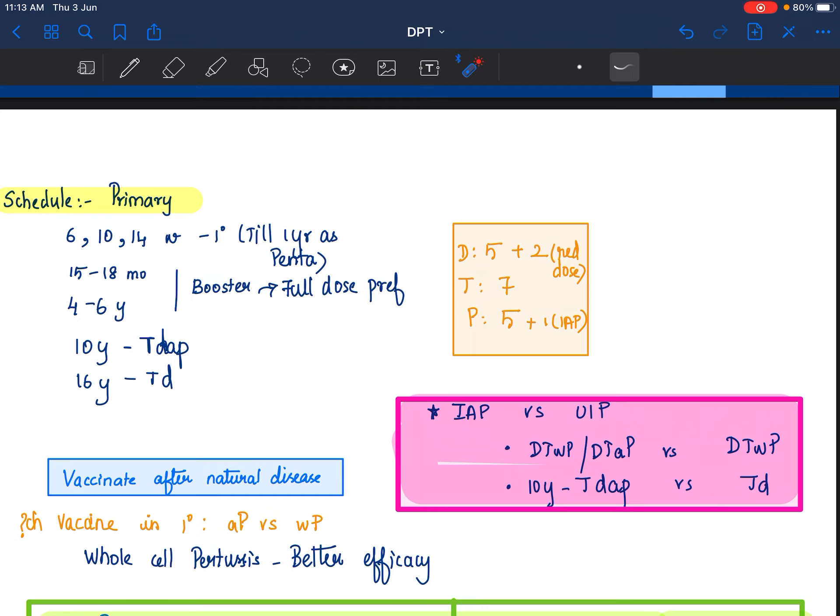Whereas, UIP gives only whole cell. There is no other option for acellular. And IAP for the 10 years, it is Tdap. Whereas, for universal immunization program, it is TD. Does not have a pertussis component here at 10 years of age.